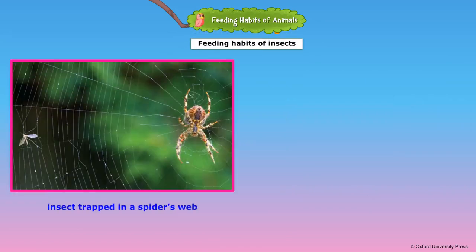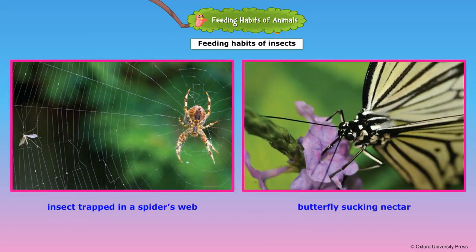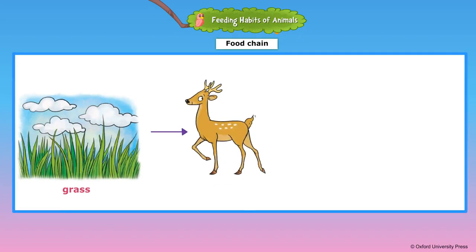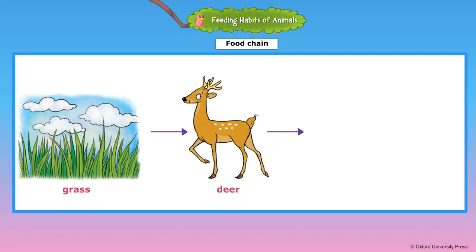Spiders trap insects in their webs. Tiny creatures such as butterflies and mosquitoes suck in their food. The butterfly has a long tongue and sucks the juice or nectar from flowers. When a mosquito bites human beings, it uses a sharp needle-like mouth part to pierce the skin and then sucks blood.